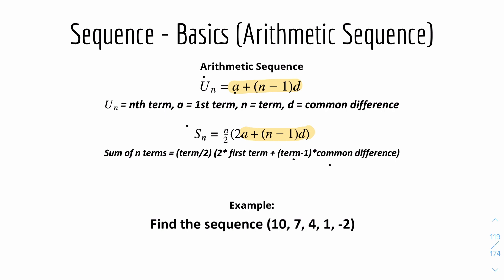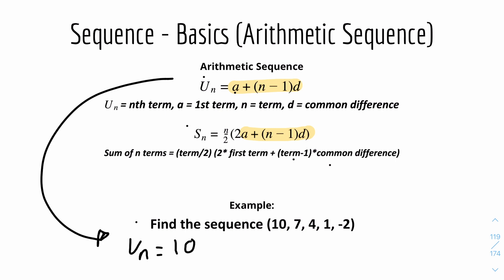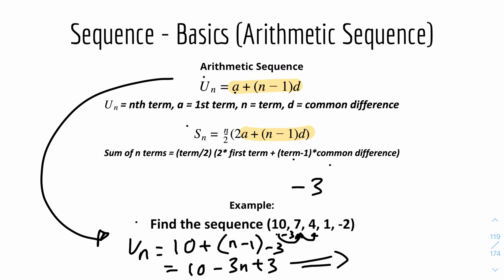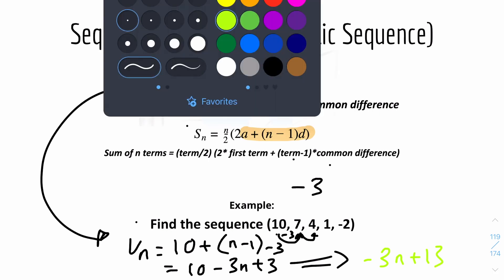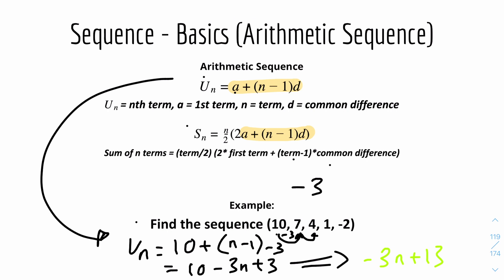For example, find the nth term for the sequence 10, 7, 4, 1, minus 2. Using the formula, u-n equals 10 plus (n minus 1) times minus 3 — because the common difference is minus 3 (from 10 to 7 you subtract 3, from 7 to 4 you subtract 3, and so on). Expanding gives 10 minus 3n plus 3, so the answer is minus 3n plus 13. You can use the normal nth term technique, but for harder problems this formula is much easier.